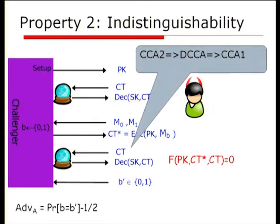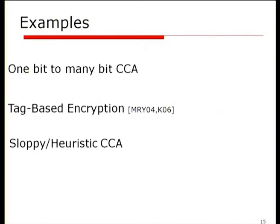Detectable CCA security lies somewhere between full CCA security and CCA1 security. What hopefully motivates it is that it seems like a natural target for multiple different things: the leading example is one-bit to many-bit encryption, but it also captures tag-based encryption and what I loosely call sloppy or heuristic CCA — if you try to build a CCA scheme and fall a little short, it might still be detectable, so applying our process could bring it back up to full CCA.